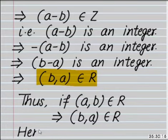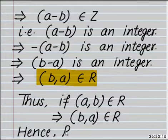Let ordered pair (A, B) belong to the given relation R. This implies A minus B is an integer. This further implies that minus of (A minus B) is also an integer, because the additive inverse of an integer is also an integer. This implies B minus A is an integer. So ordered pair (B, A) belongs to the given relation R. Hence, the given relation R is symmetric.